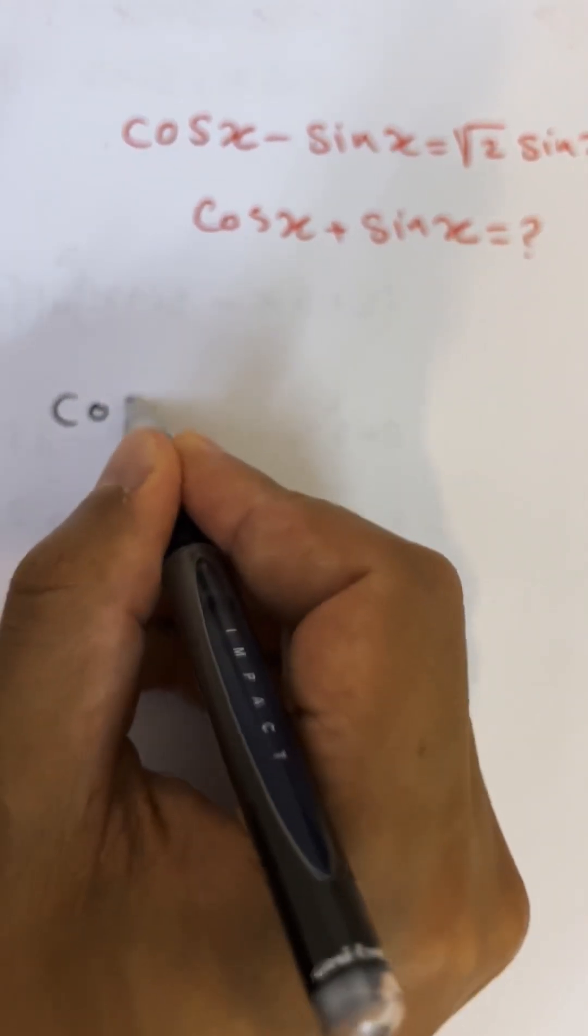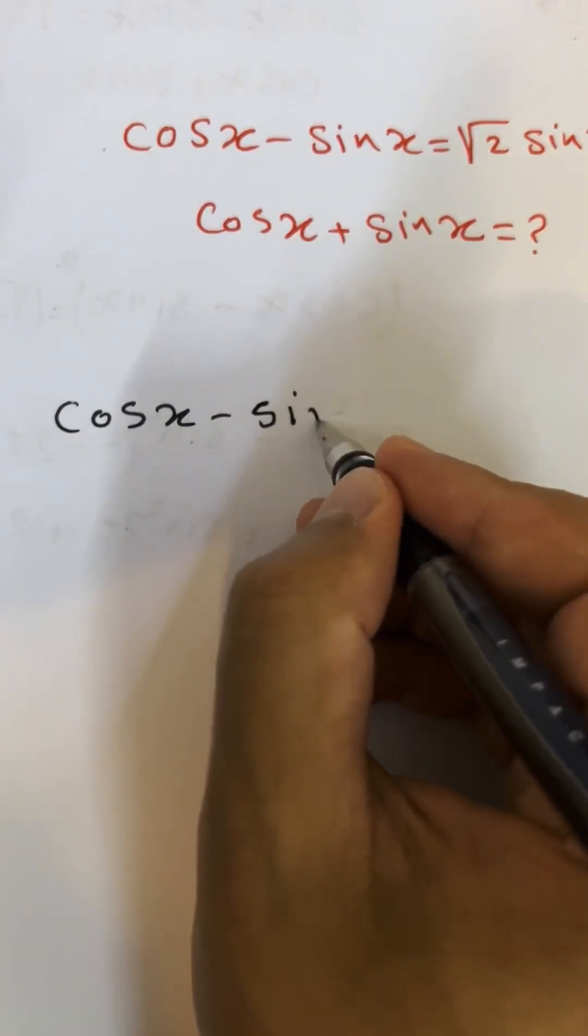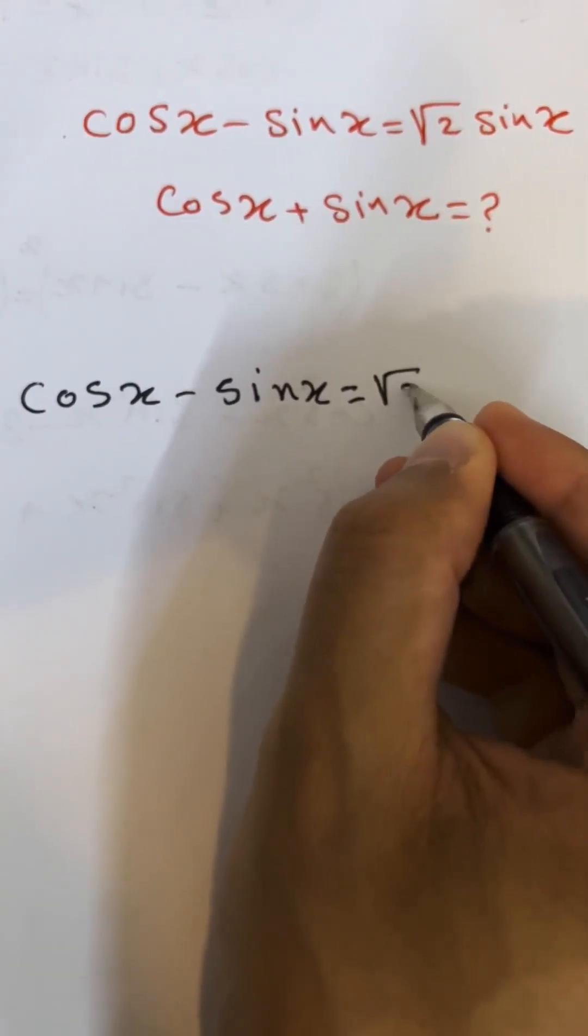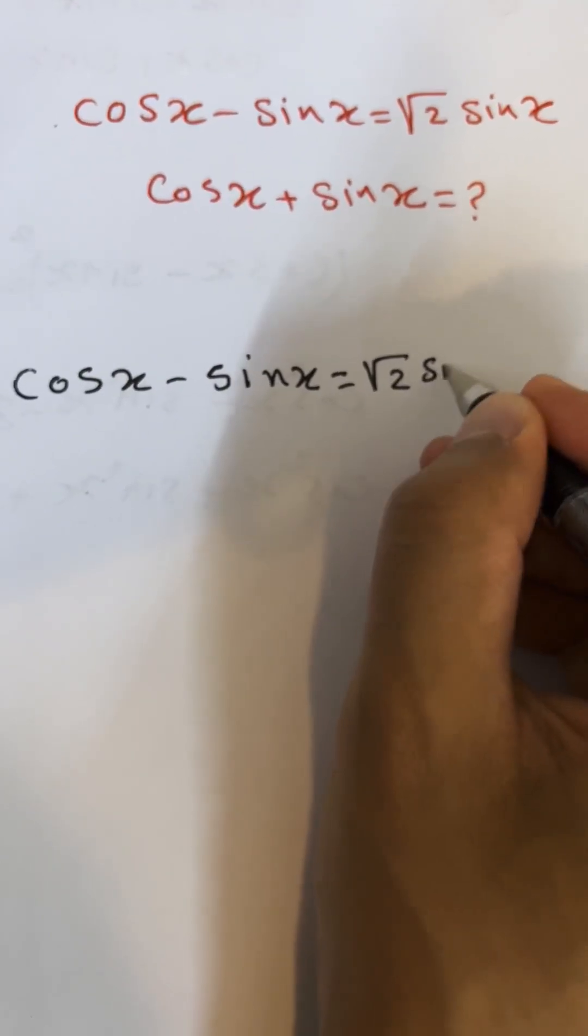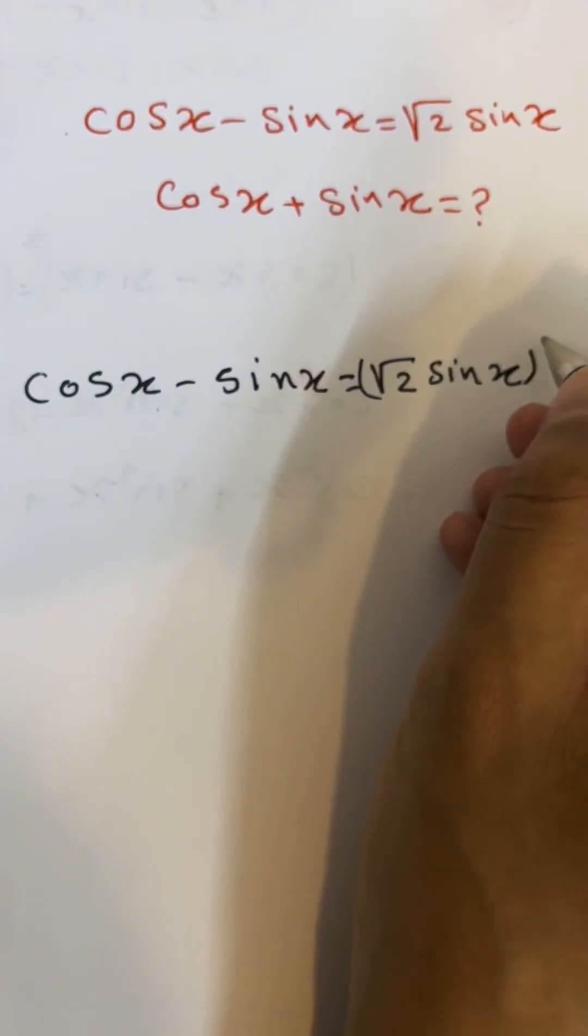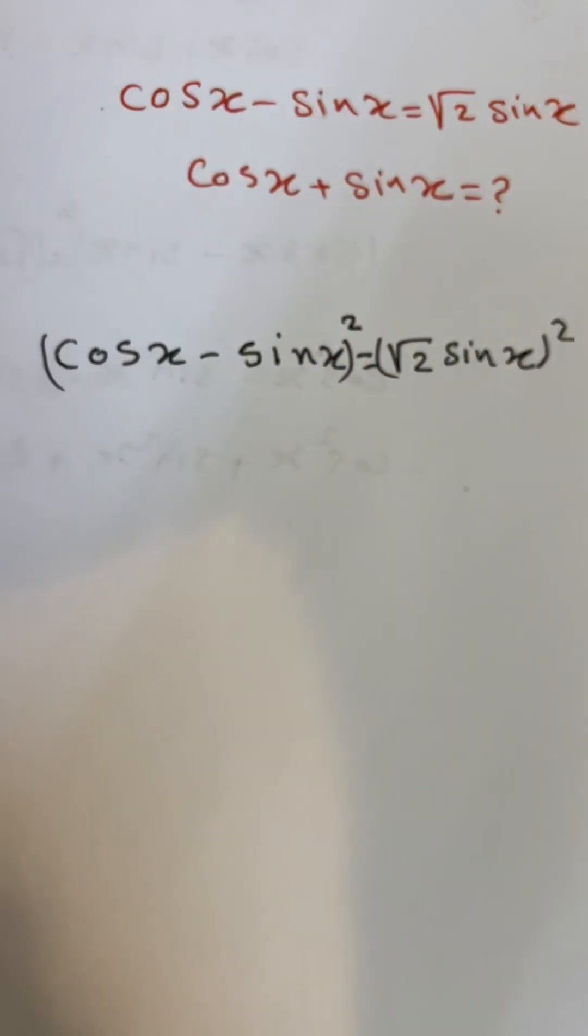Let me write it again: cosine x minus sine x equals root 2 sine x. We are going to square both sides—square both the right and the left.